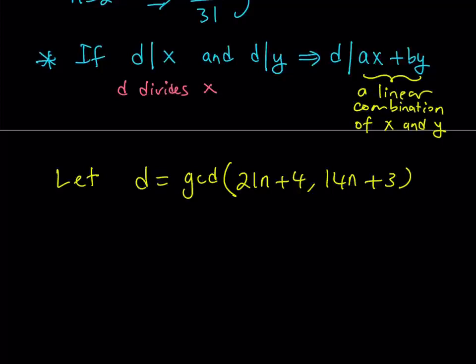Suppose D equals the GCD. Now, this means that D is a common divisor, right? So, that implies D divides 21n plus 4 and D divides 14n plus 3. You get the idea? So, remember, we just talked about a rule, a theorem, which says D divides x and D divides y. That implies D divides ax plus by. So, we're going to be using that rule here.